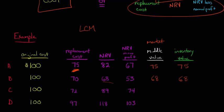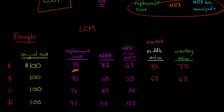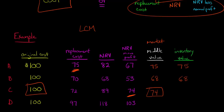With situation C, we've got 72, 89, and 74. The NRV minus the profit is actually the middle value here — it's 74, which is in between 72 and 89. So that's going to be our middle value: 74. We compare this 74 against the cost of 100, and 74 is lower, so our inventory value is going to be 74. In situation C, it was the NRV minus the profit margin that determined market value.